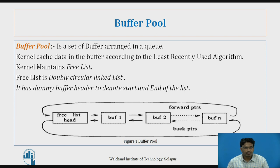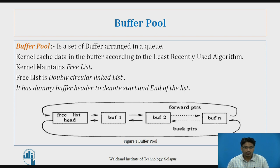The kernel also maintains the free list. Basically, the free list is a doubly circular linked list. It has a dummy buffer header to denote the start and end of the list. Let's look at figure 1, the buffer pool. In this figure, the first node is the free list head, which is the dummy head node.